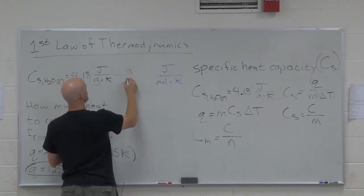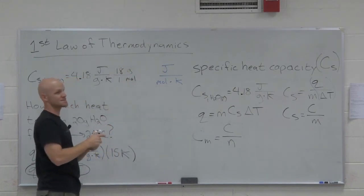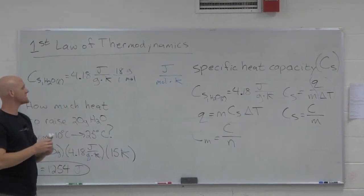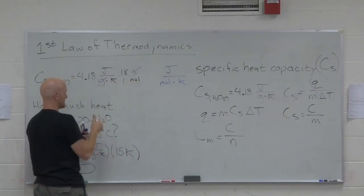So I need grams on top, moles on bottom, and one mole for water weighs 18 grams. Sweet. That's all you do, multiply by 18, and that will give it to us. So our grams will cancel, and we'll end up with joules per mole Kelvin. Somebody get me that?